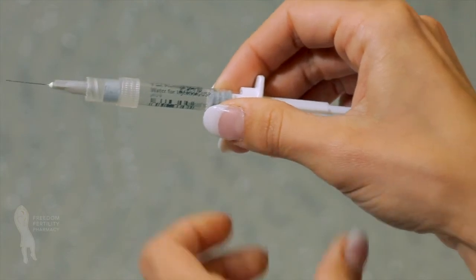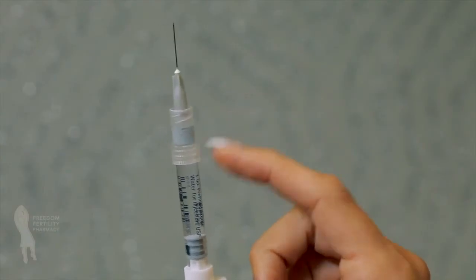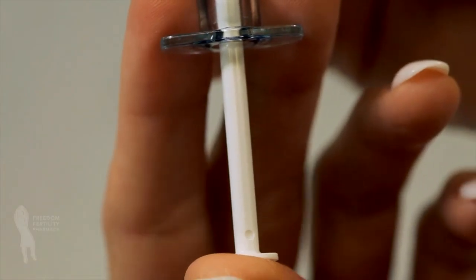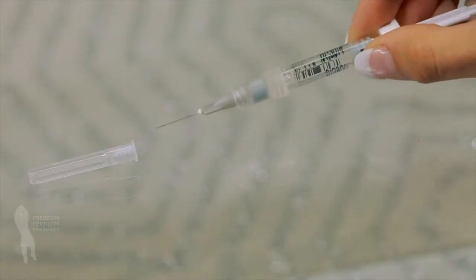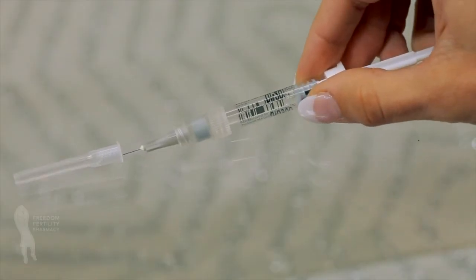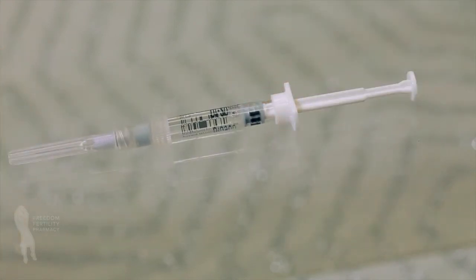Remove any air bubbles from the syringe by pointing the needle up and tapping on the syringe. Slowly push the plunger until all air bubbles are gone and a drop of liquid appears on the tip of the needle. Recap the gray injection needle. Do not touch the needle or allow it to touch any surface. The syringe is now ready for administration.